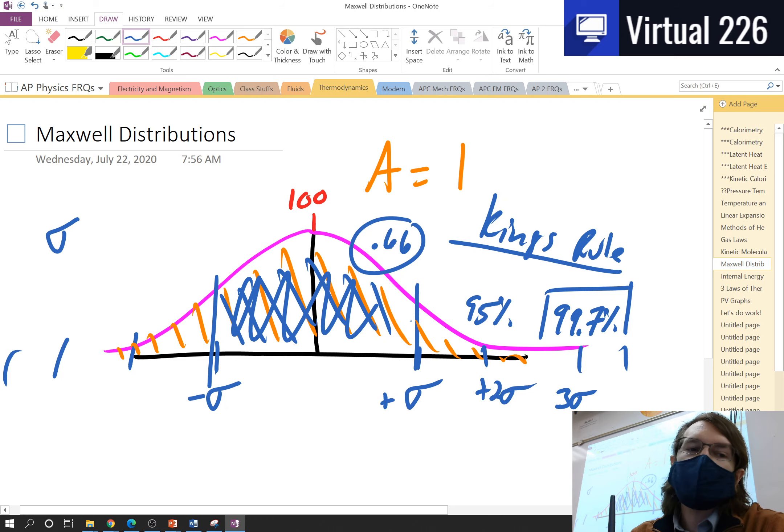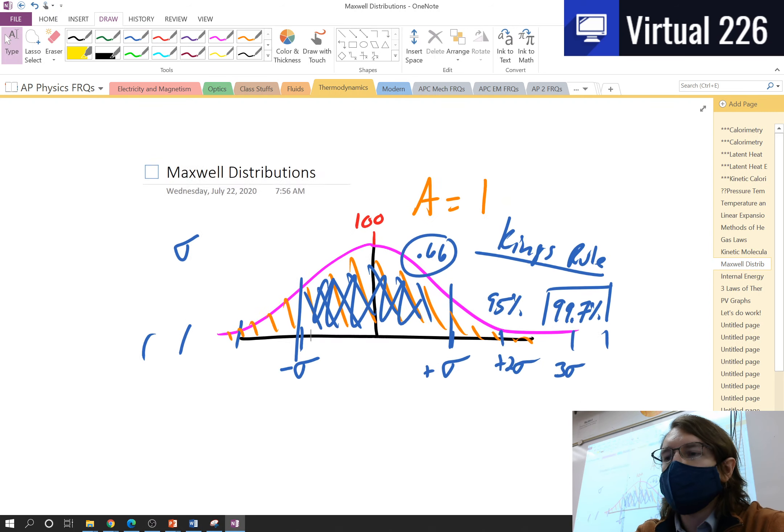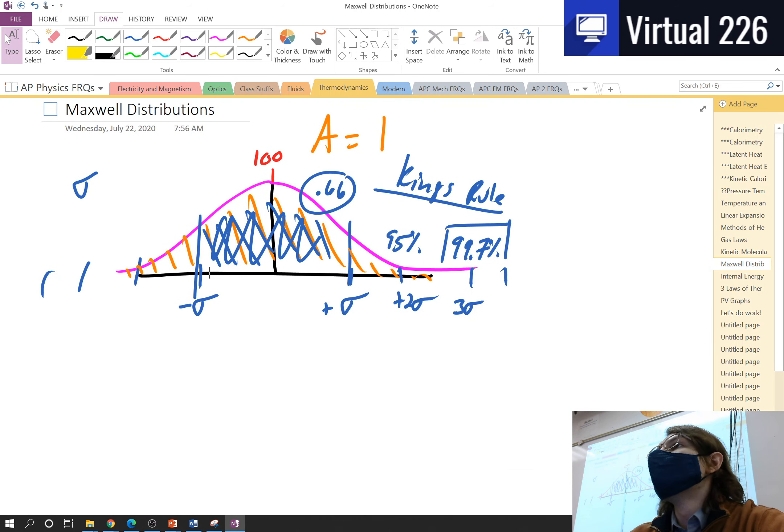So this is a normalized distribution. Now why are we talking about this in a thermodynamics lecture? Well, when we looked at the kinetic molecular theory derivation, one of the things we talked about was we had a large number of molecules all moving at random directions and random speeds, and that random speeds part is important to us.